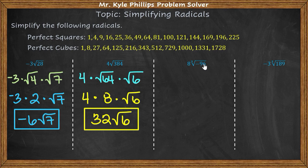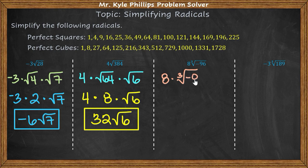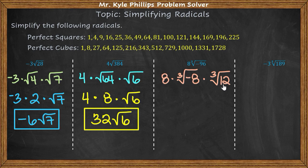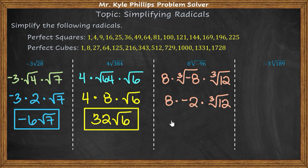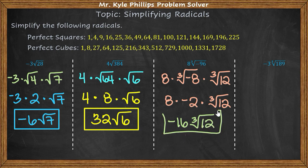The idea is the same — we're looking for the largest perfect cube that goes into 96. That's 8, so we have the cube root of negative 8 times the cube root of 12. We move the negative outside the radical so only positive numbers remain under the radical sign, giving us 8 times negative 2 times the cube root of 12. This simplifies to negative 16 times the cube root of 12.